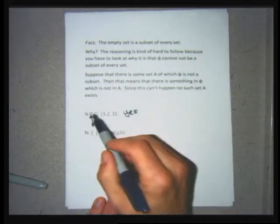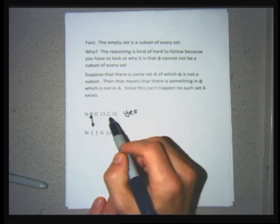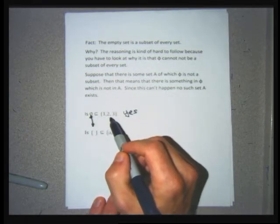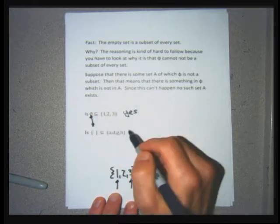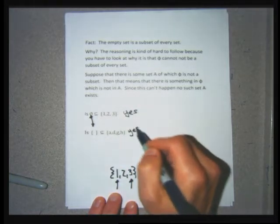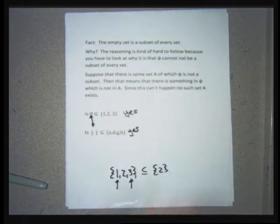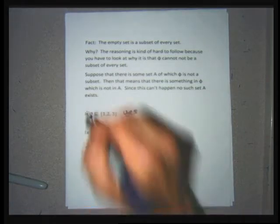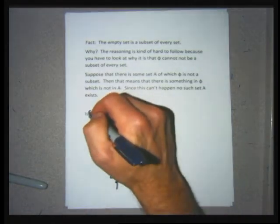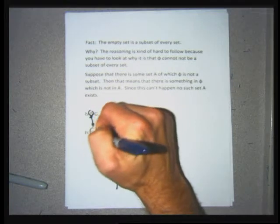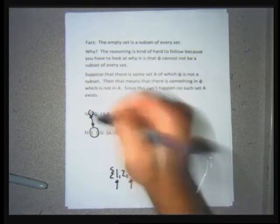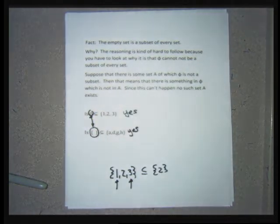For the empty set not to be a subset, it would have to contain something like a 4 or a B or a W — but it doesn't. Both the empty set symbol and the squiggly brackets with nothing inside represent a set with no elements. By default, the empty set is a subset of every set.